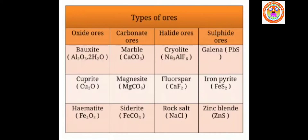Coming to halide ores — these ores contain one or more halogens. Examples are cryolite, fluorspar, and rock salt. Cryolite has the formula Na₃AlF₆ and is one of the ores of aluminium. Fluorspar is calcium fluoride, CaF₂, an ore of calcium. Rock salt is sodium chloride, NaCl — common salt. These are examples of halide ores.